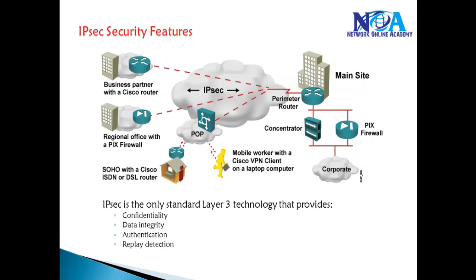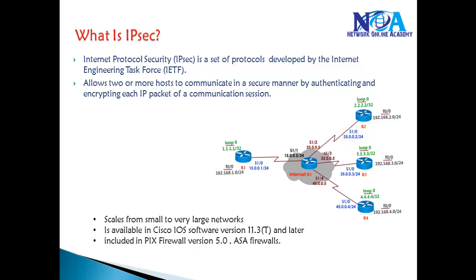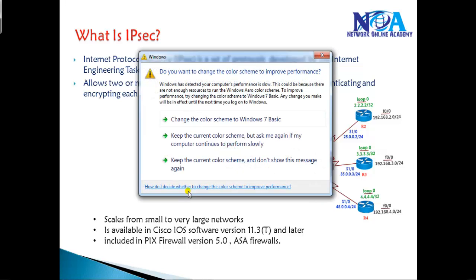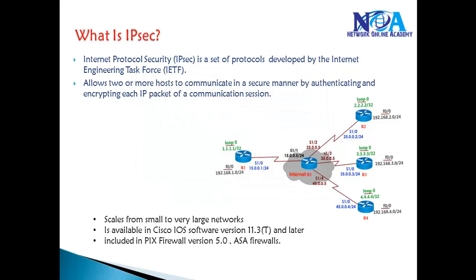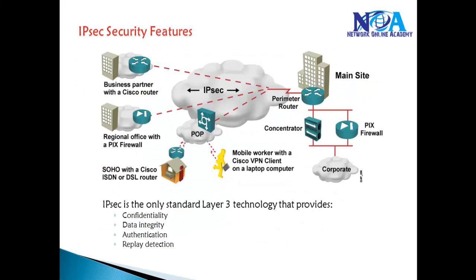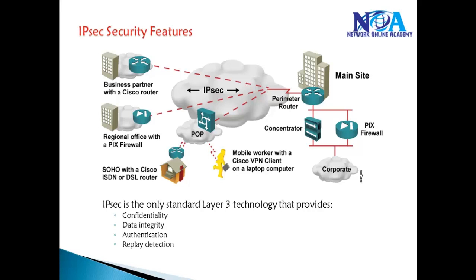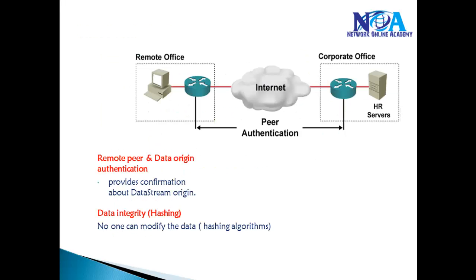Our main focus will be on going through IPSec features, and in later videos we'll see how to implement IPSec on Cisco IOS routers. IPSec majorly provides four different options: confidentiality, data integrity, authentication, and replay detection — that is, preventing anti-replay attacks.